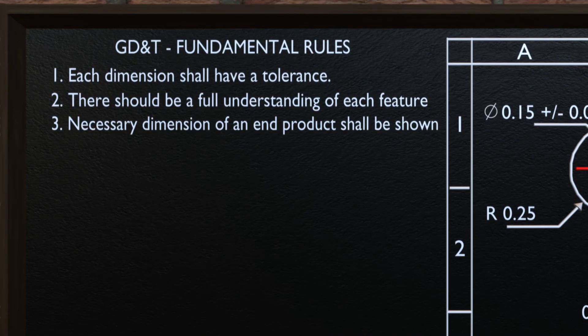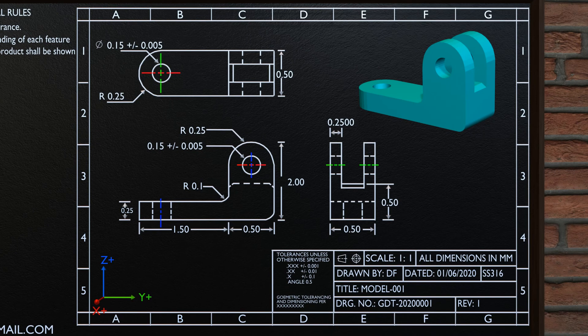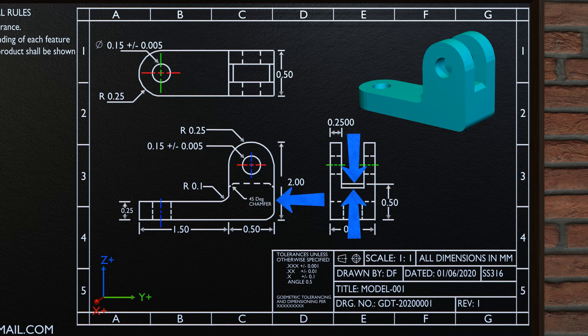The third fundamental rule is: necessary dimensions of an end product shall be shown. As you can see, most of the dimensions are shown in the drawing, but some dimensions are still missing — there is no dimension mentioned for this feature. Hence it does not follow the third fundamental rule. When we place this dimension of 45-degree chamfer, we can calculate that dimension, and with this feature in place, it is in compliance with the third fundamental rule.